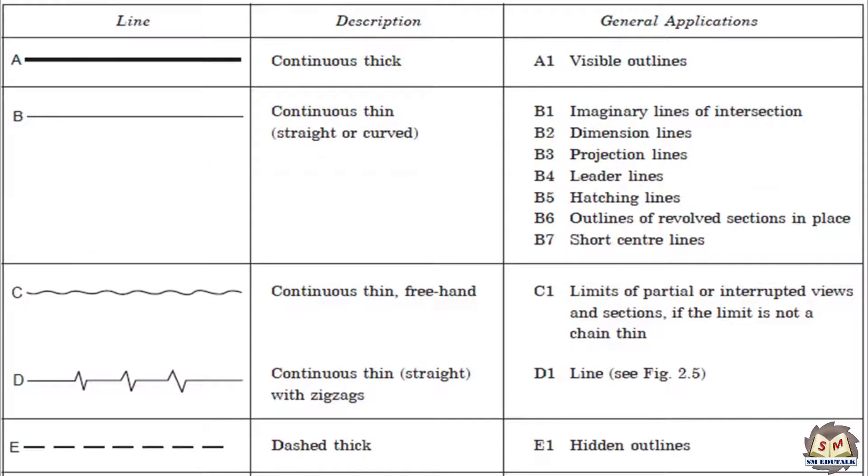For general engineering drawings, the types of lines recommended by the Bureau of Indian Standards shown in table must be used. In this table, first column comprises of the drawing entity diagram, second column describes what it is and the third column tells where it is used.